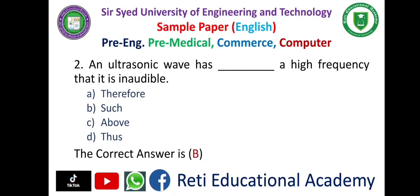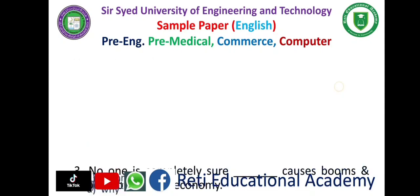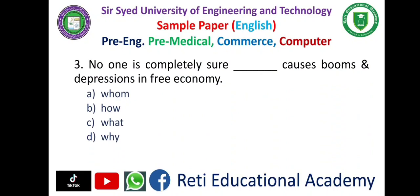Question number two: 'An ultrasonic wave has ___ a high frequency that it is inaudible.' A. Therefore, B. Such, C. Above, D. Thus. The correct answer is B: such. 'An ultrasonic wave has such a high frequency that it is inaudible.' Question number three: 'No one is completely sure ___ causes booms and depressions in a free economy.' A. Home, B. How, C. What, D. Why. The correct answer is C: what.